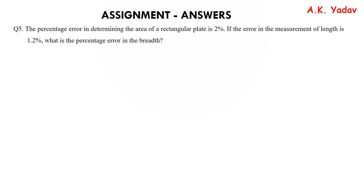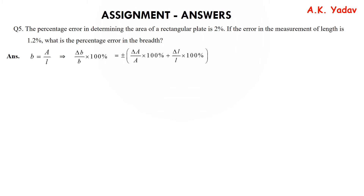Question 5: The percentage error in determining the area is given as 2% and for length it is 1.2%. We need to find the percentage error in breadth. Since B = A / L, breadth = area divided by length. So delta B / B × 100% = delta A / A × 100% + delta L / L × 100%. Putting in the values gives ±3.2%.